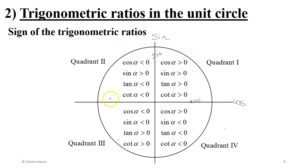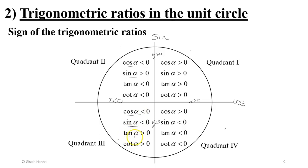In quadrant 2, x is negative while y is positive, so cosine is negative and sine is positive. Since cosine and sine have opposite signs, their ratios — tan and cotan — are negative in quadrant 2. In quadrant 3, x is negative and y is negative, so cosine and sine are both negative, which makes tan and cotan positive in quadrant 3.